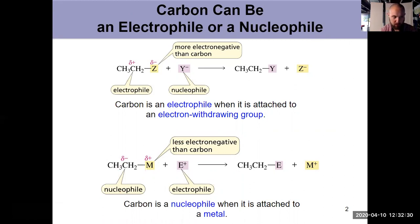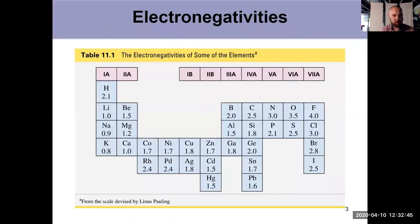That allows it to react with an electrophile. The takeaway is carbon has to be bonded to something less electronegative than itself to be nucleophilic. If we think about the possibilities on the periodic table, carbon has an electronegativity of 2.5.